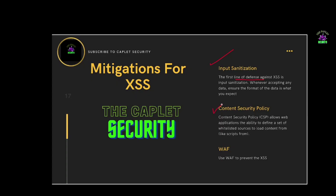The next step to prevent cross-site scripting is Content Security Policy. CSP basically gives the application the ability to decide which data they want to render and which data they want to ignore. It simply means you are filtering out sources and creating a whitelist so that the application can use that whitelist to render data in the future.